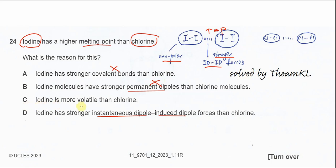C: iodine is more volatile than chlorine. This is also wrong because the chlorine is actually gas, iodine is solid, and moreover the iodine has higher melting point than the chlorine. So this one also cannot be the answer.